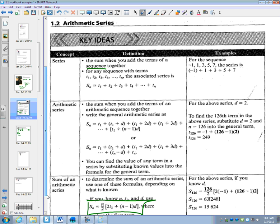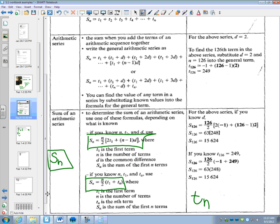Do I know n? 50. Do I know term 1? Yes. Do I know d? Yes. I could use the first one. Could I use the second one? Do I know n? Yes. Do I know term 1? Yes. Do I know Tn? Do I know that last term? I do. So I could use either formula.